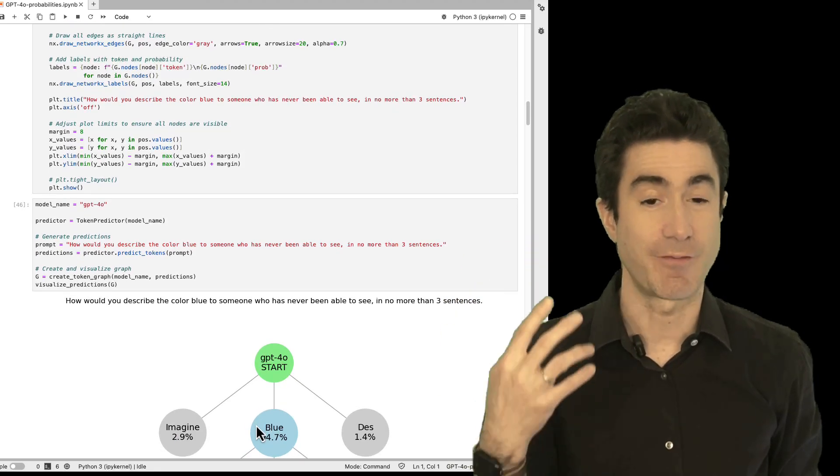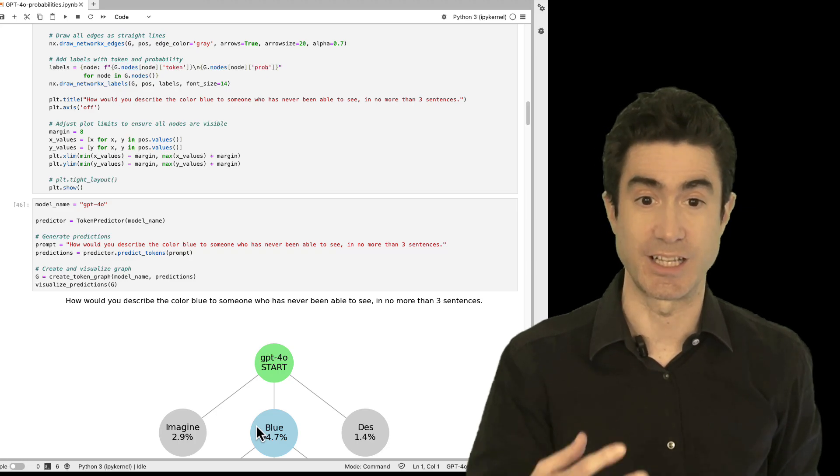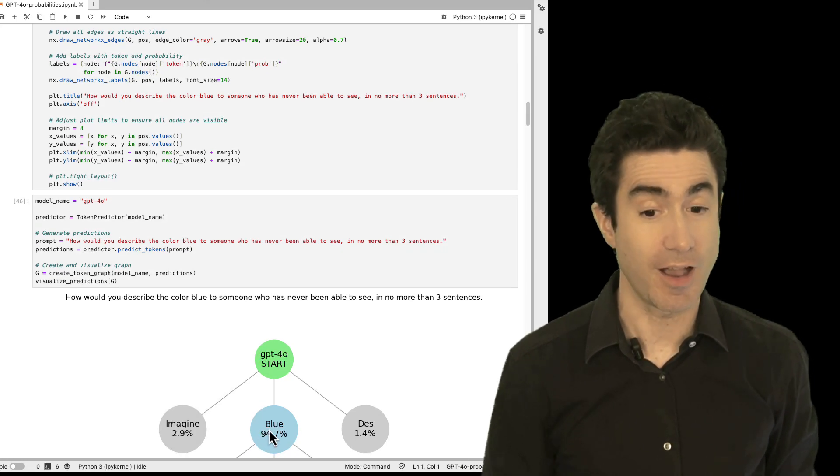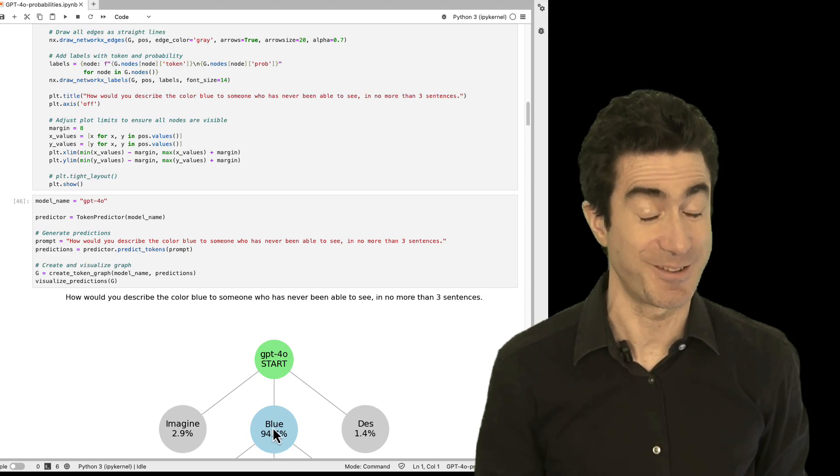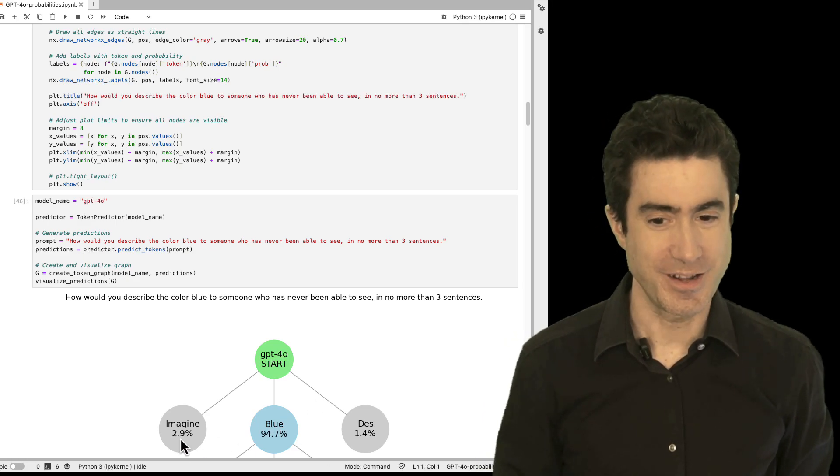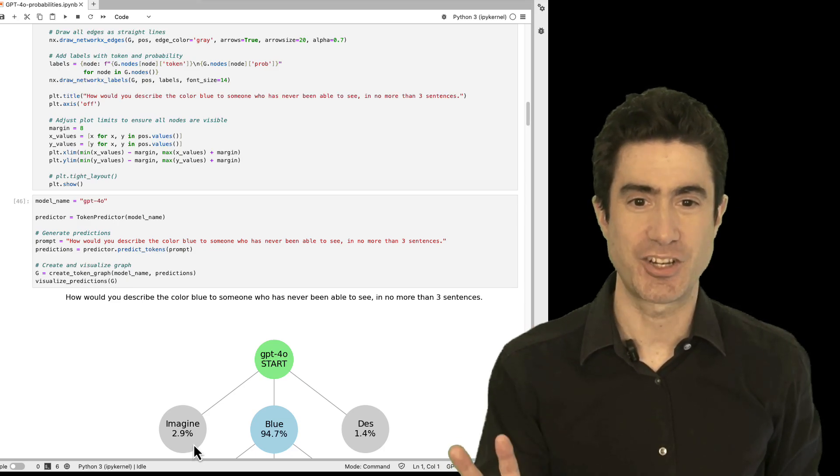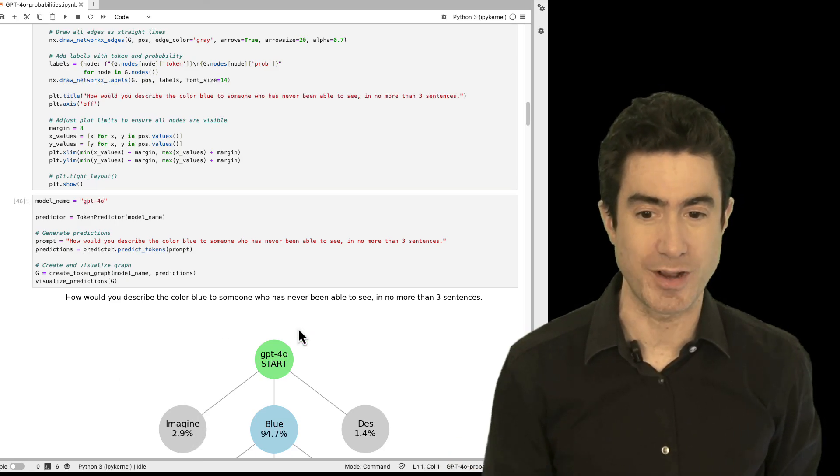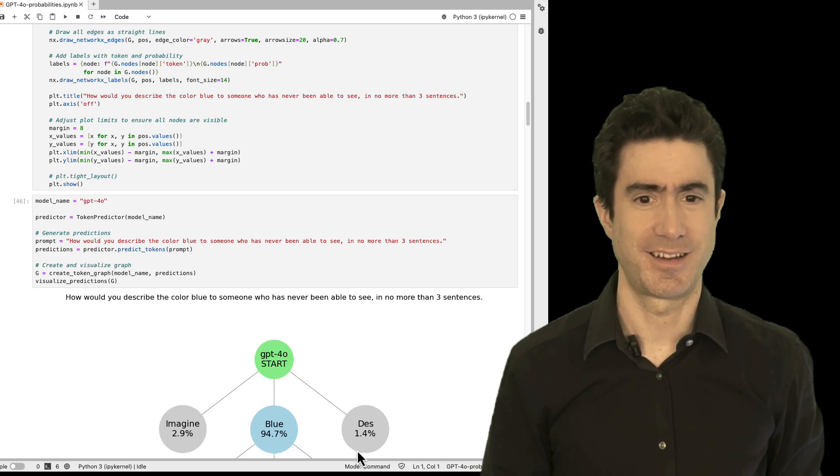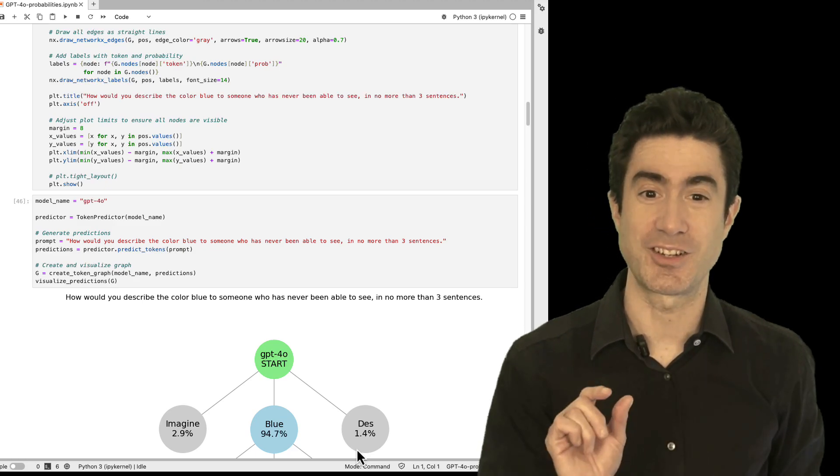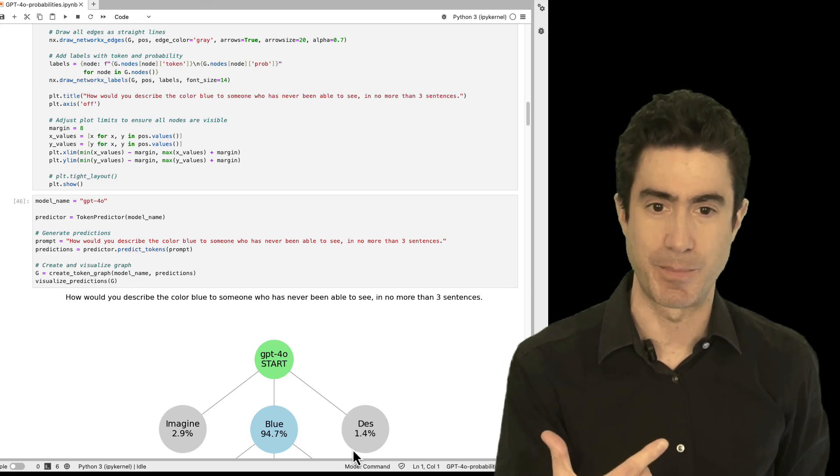So this green blob here says start represents the beginning of GPT generating its response predicting the most likely tokens. And what we'll see right away is that for the first token GPT has come up with a number of probabilities for all the possible next values and the one that's got the highest probability is for the word blue. The probability for blue you can see it thinks it's a very likely next token. It's also given as the second most likely the word imagine. So imagine might be the kind of word that might begin after a question that's put like this.